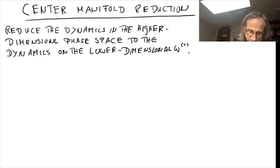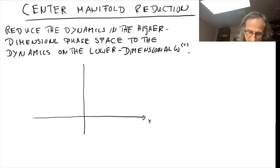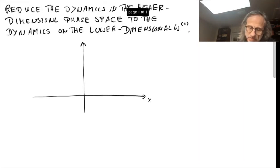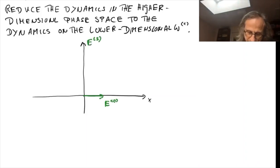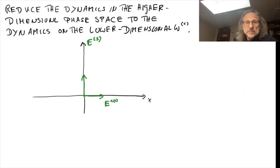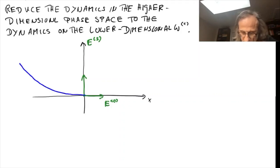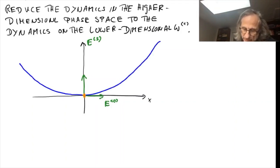Let's first draw it. Assume we're in the phase plane, so we have some two-dimensional system. In this case, the center eigenspace is the x-axis and the stable eigenspace is the y-axis. From the center manifold theorem, there is a center manifold which is tangential to the center eigenspace. It could look like this — it goes through the fixed point, which we assume is at the origin.